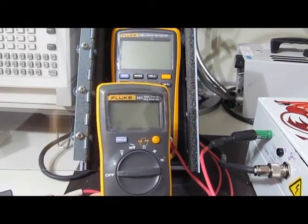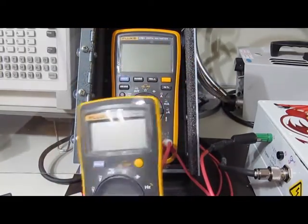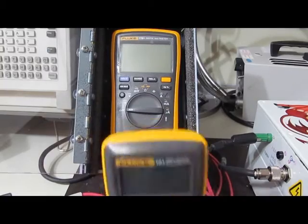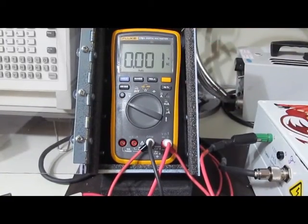Okay so I've got the new generator all set up. I've already ran this Fluke 101 through all the tests. It's passed again with line colors no problem. So we're going to go ahead and start now with the Fluke 17B Plus.